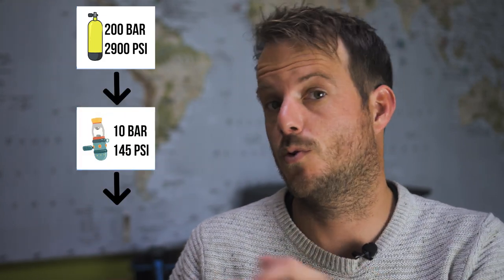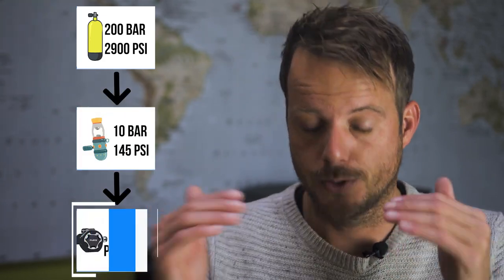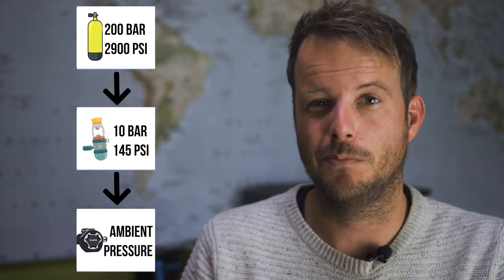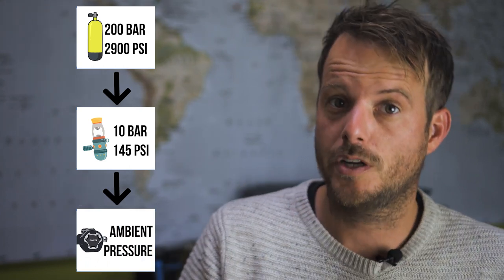First of all why do we need a first stage? Well if we try to breathe directly from the tank, it's too much for our lungs to handle and we will probably damage them. So what we do is we screw on a first stage and this reduces the pressure to 10 to 13 bars. This is still too much but the second stage will take care of the rest.